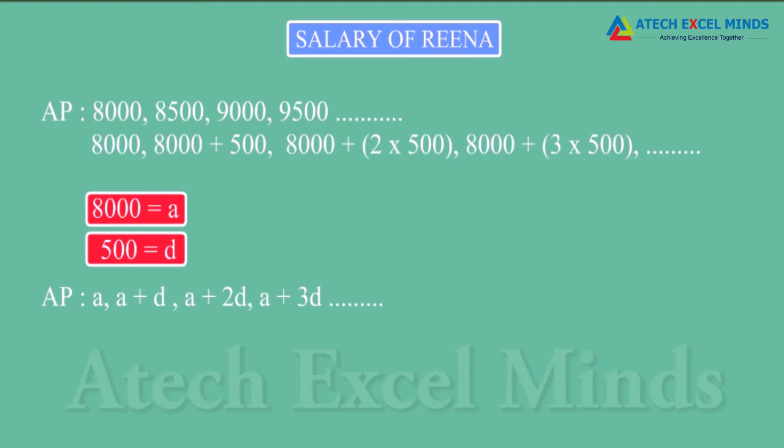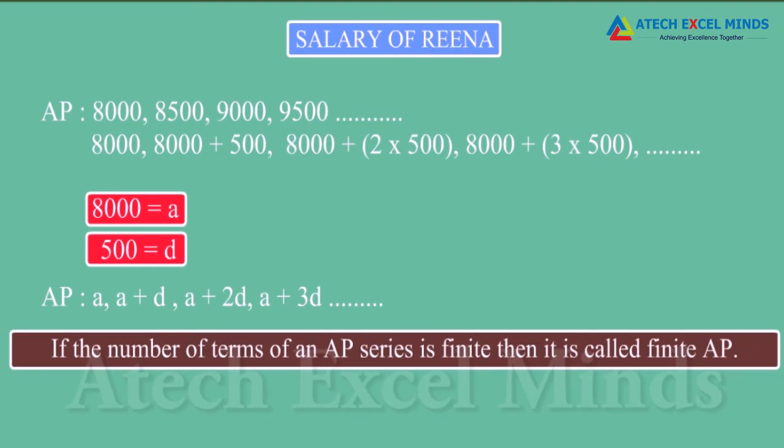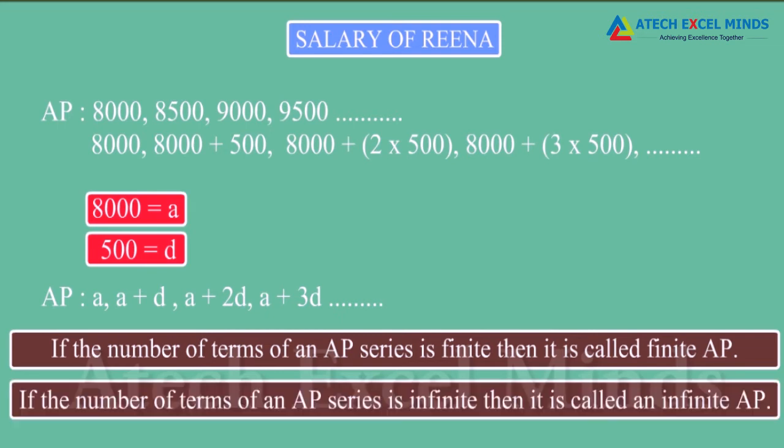If the number of terms of an AP series is finite, then it is called finite AP. Salary of Rina for 10 years is an example of finite AP. If the number of terms of an AP series is infinite, then it is called an infinite AP.